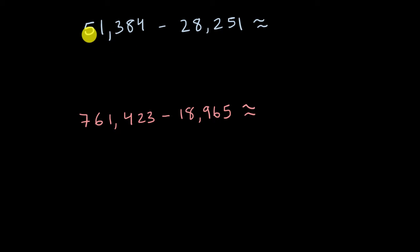So here I have two numbers that go all the way to the 10,000th place. So I'm just going to round them both to the nearest 10,000. So 51,384 rounded to the nearest 10,000 is 50,000. And 28,251 rounded to the nearest 10,000 is roughly 30,000. So in my head, I would say 50,000 minus 30,000, well, that's going to be 20,000. So this whole thing is approximately equal to 20,000.